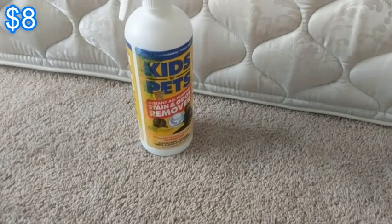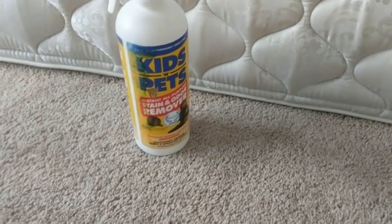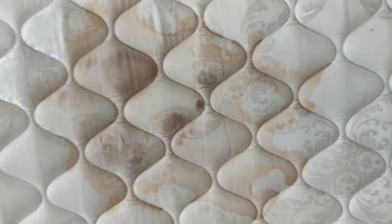Someone at work told me about this stuff, Kids and Pets. You get it at Walmart. This was full color Coca-Cola brown. All I did was spray it on there. There was another spot right here that just came out. So I'm going to show you what happens after I scrub it. It is super impressive.